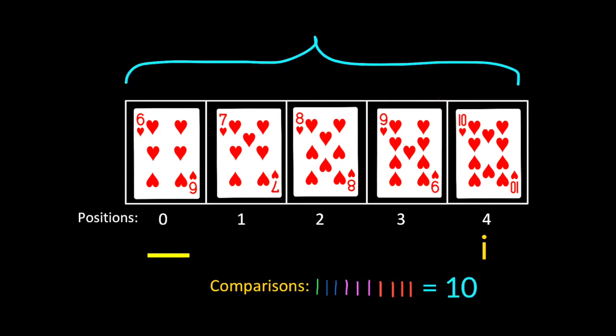So you can see in the case where n was 5, we made 10 comparisons. Now let's do a big O analysis for the general case.